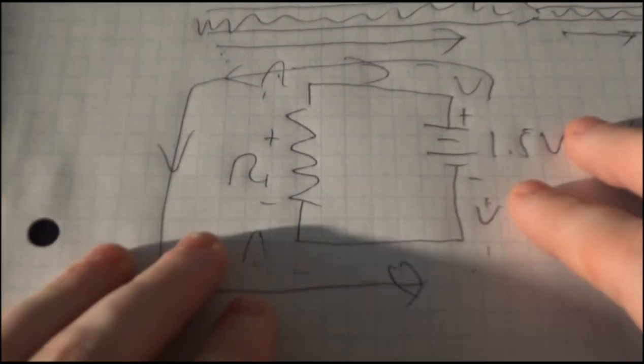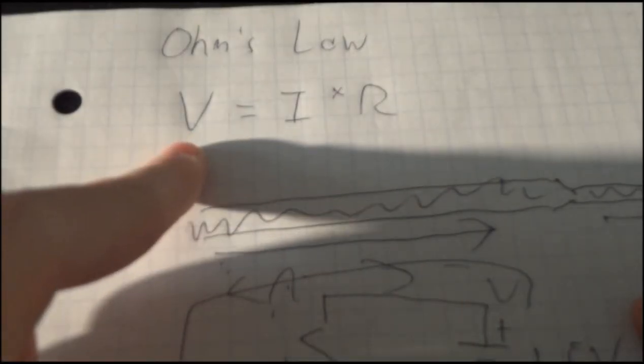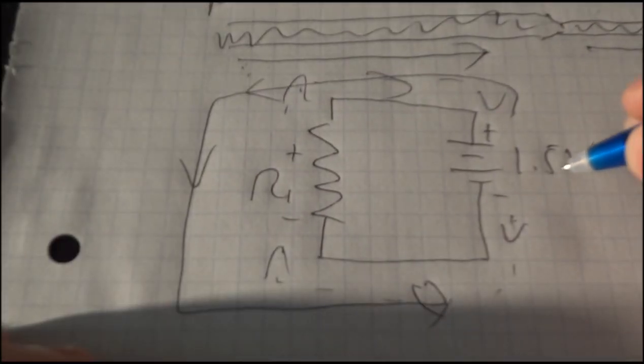Now how does Ohm's law apply to this circuit? Well again, Ohm's law is a relationship between voltage, current, and resistance. And in this case I've given this voltage source here a voltage. I've given it one and a half volts.